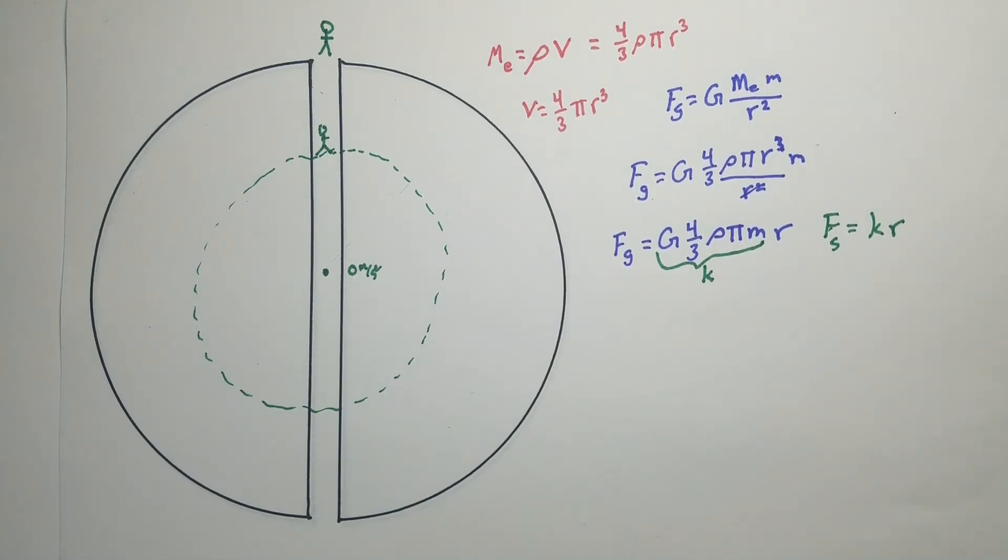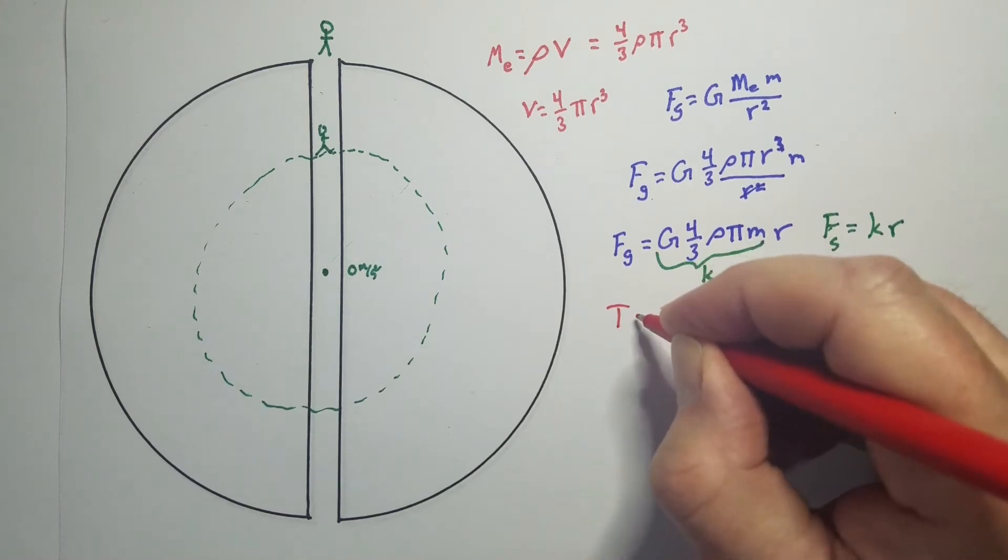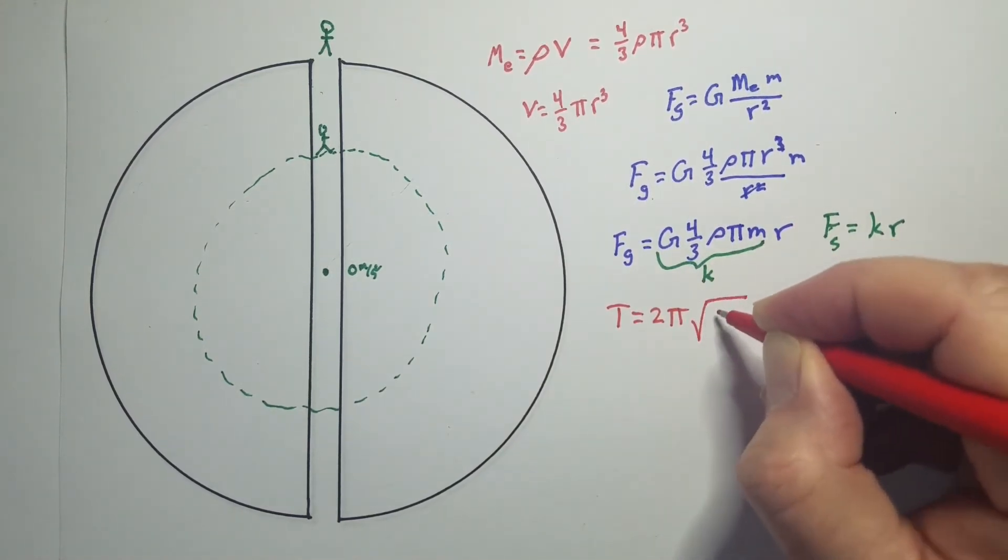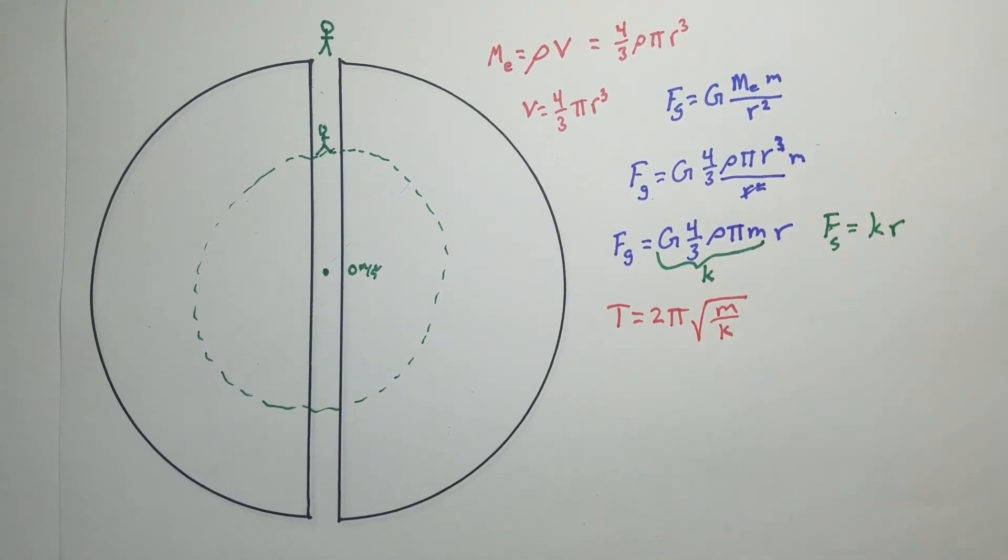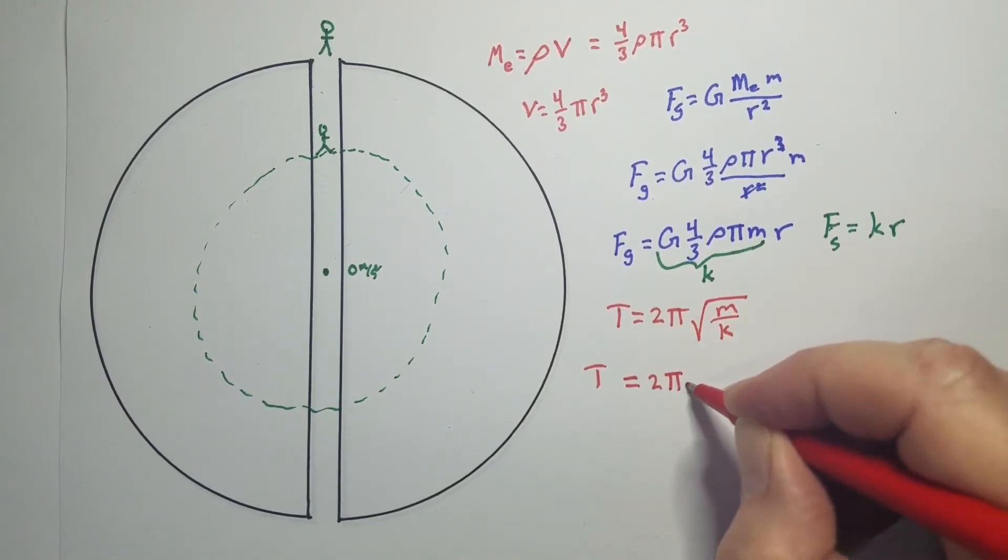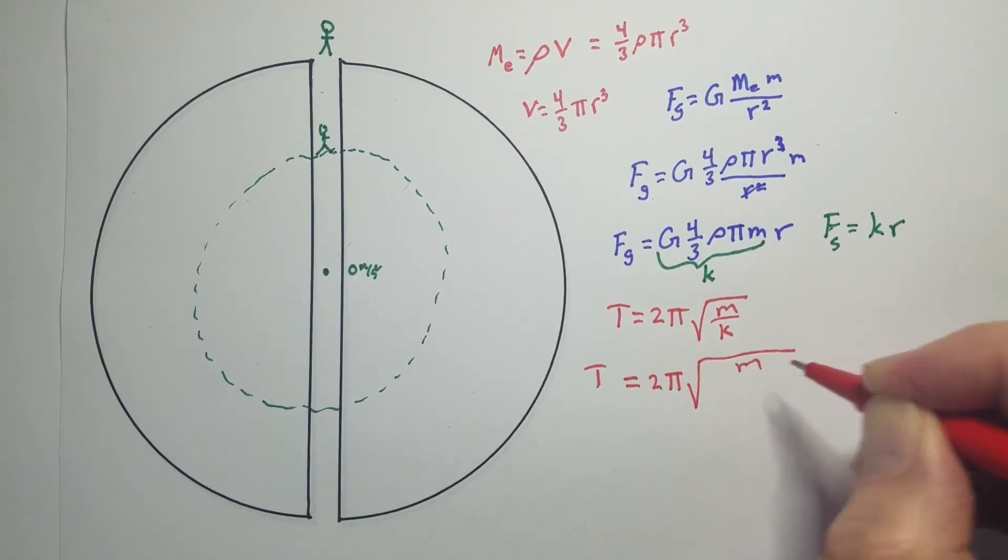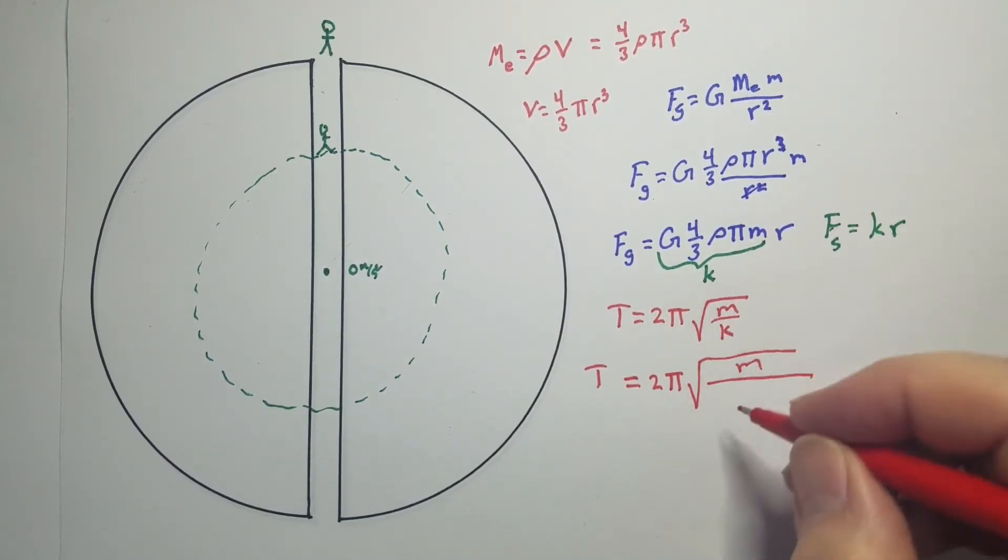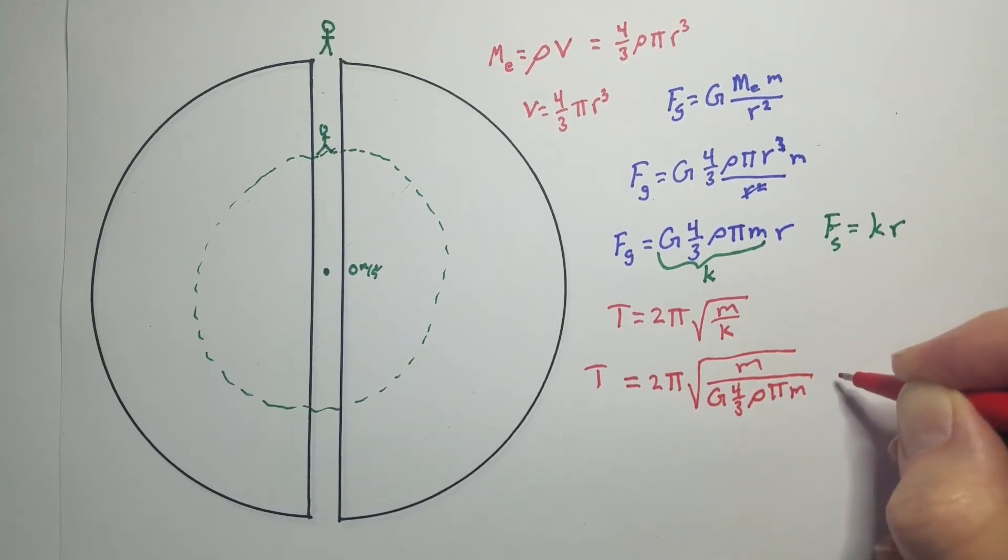So the period of a spring is 2 pi square roots of m over k. So we're going to put this in for k. All right, get ready for some math. So here we go. So pi times 2 square root of m. Now at the bottom, we've got all this mess. So universal gravitational constant. Four thirds, which that can flip up. Density of the earth. Pi. m.